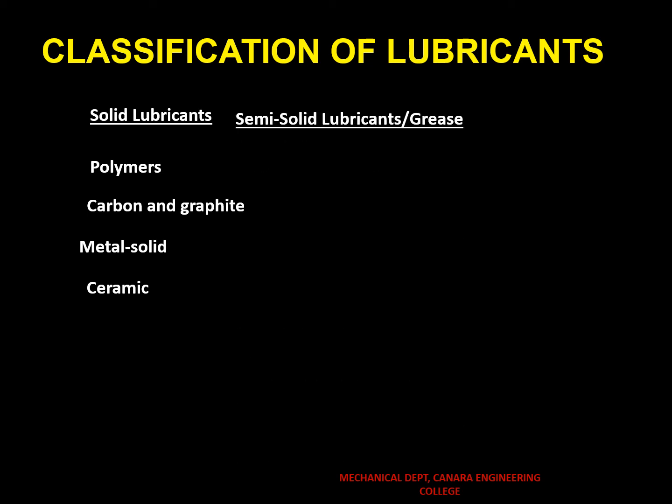Semi-solid lubricant or grease. Grease is considered to be one of the most versatile forms of lubricants. It can be used in a wide range of environments across various temperatures, load conditions, or speeds. Petroleum and synthetic base oils are used in manufacturing of grease. The properties of the base oil are very important as they affect the properties of the grease that gets produced from the oil.